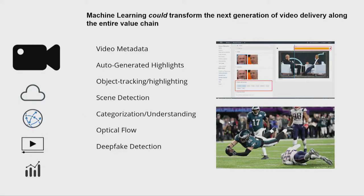ML actually falls into basically every step of this pipeline. Starting at source creation, we can use ML for highlight generation, scene detection, video categorization, and deepfake detection, which is becoming increasingly a concern. Last month, Facebook released a new dataset on deepfake detection. So just at the point of video ingest, we can already create a bunch of machine learning models that add value to the viewing experience.